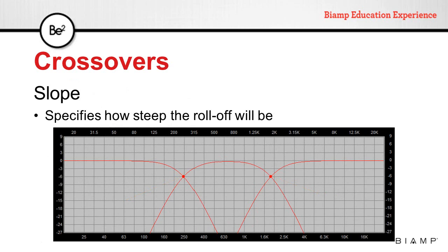The slope is the attenuation in dB per octave past the cutoff frequency. The slope can also be specified in orders, where one order is equivalent to a 6 dB per octave slope.